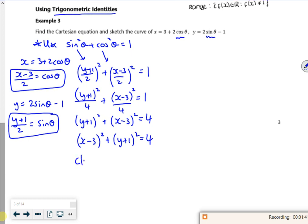So the centre, we know it's a circle, the centre is (3,-1) with a radius of 2. It says to sketch it. So (3,-1) is there. It's got a radius of 2.